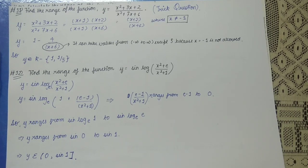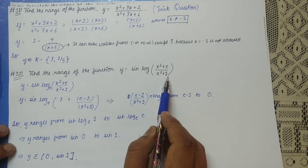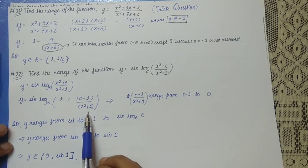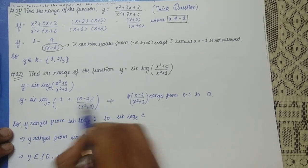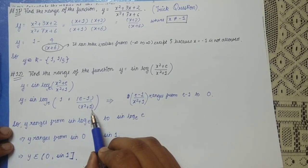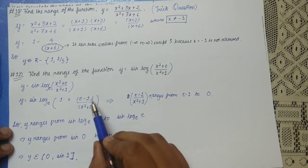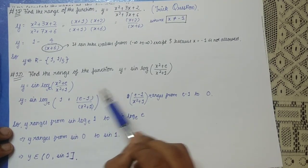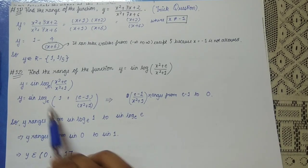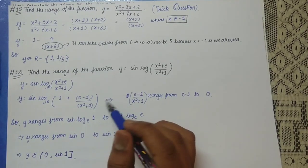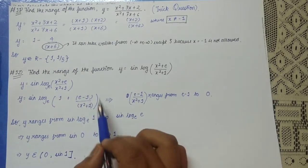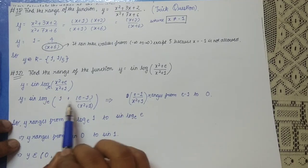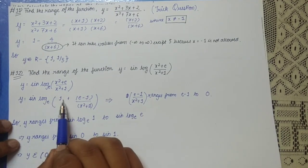The next question: find the range of y = sin(log((x² + e)/(x² + 1))). We rewrite the argument as 1 + (e − 1)/(x² + 1). Since x² + 1 ∈ [1, ∞), at x = 0 the argument equals e, giving y = sin(ln e) = sin(1). As x → ±∞ the argument → 1, giving y = sin(ln 1) = sin(0) = 0.